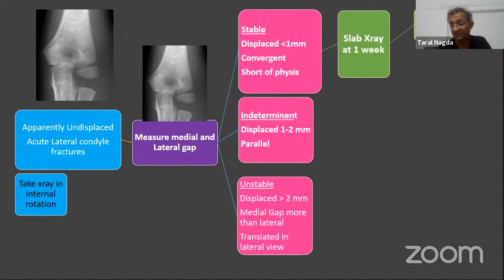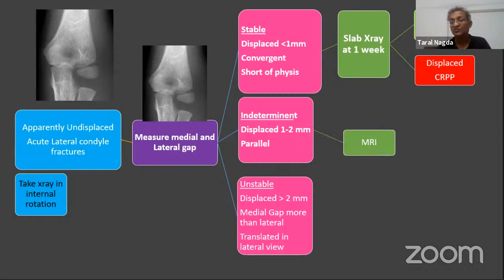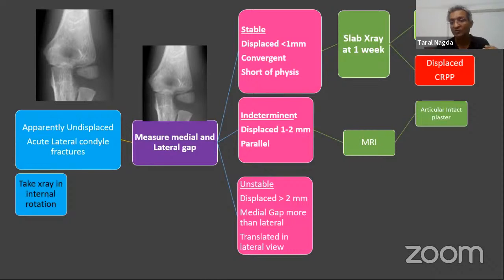If families come from far away or are unreliable for one-week follow-up, it's better to pin them straight away. Fractures displaced more than two millimeters where the medial gap equals or exceeds the lateral gap — especially those translated on the lateral view — are unstable fractures. Those need closed reduction and pinning. For stable fractures: slab, X-ray out of plaster at one week. If still undisplaced, continue plaster.